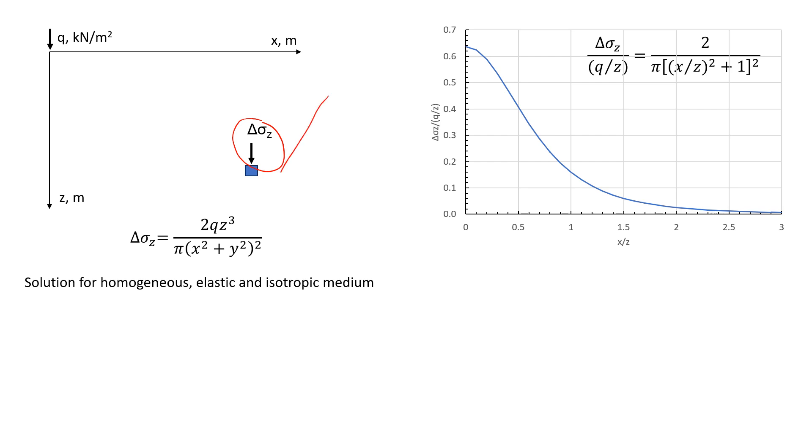We're going to apply this load here, which we call q. We typically use it as a stress, and let's imagine that q will be 15 kilonewtons per square meter. This is just an example that we're going to do right now.